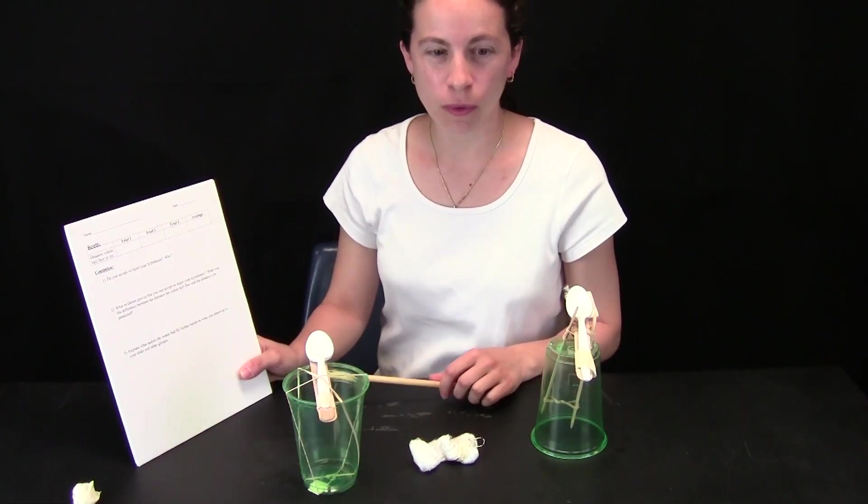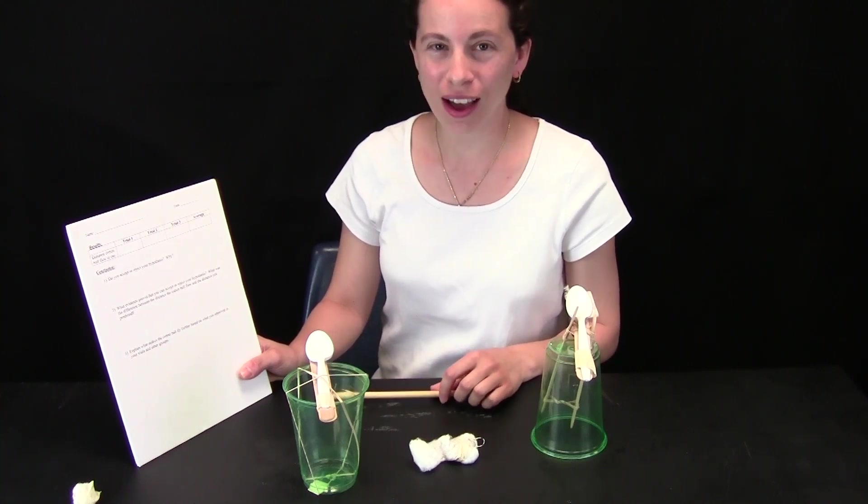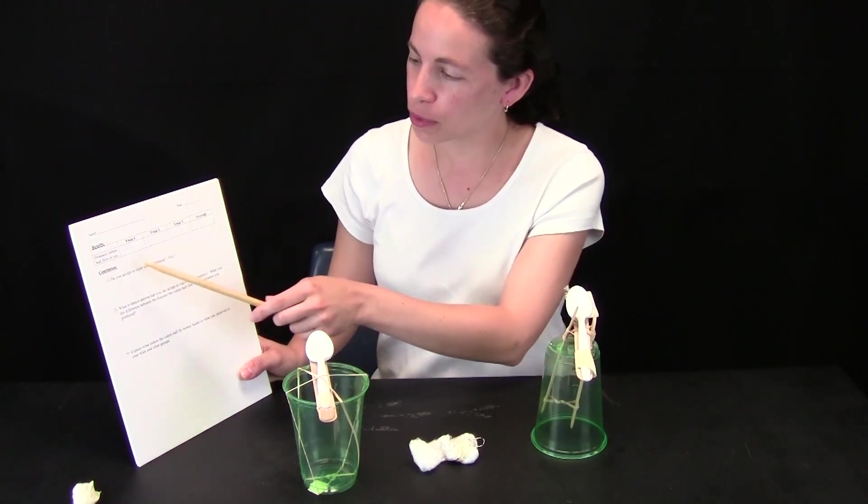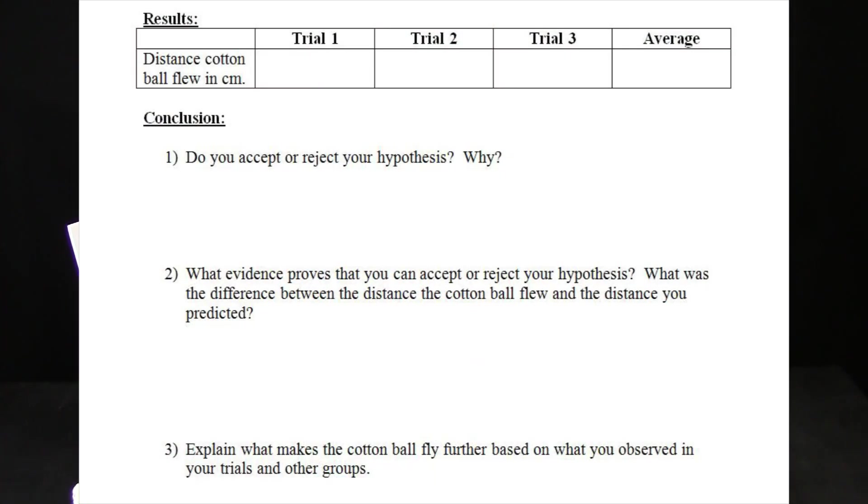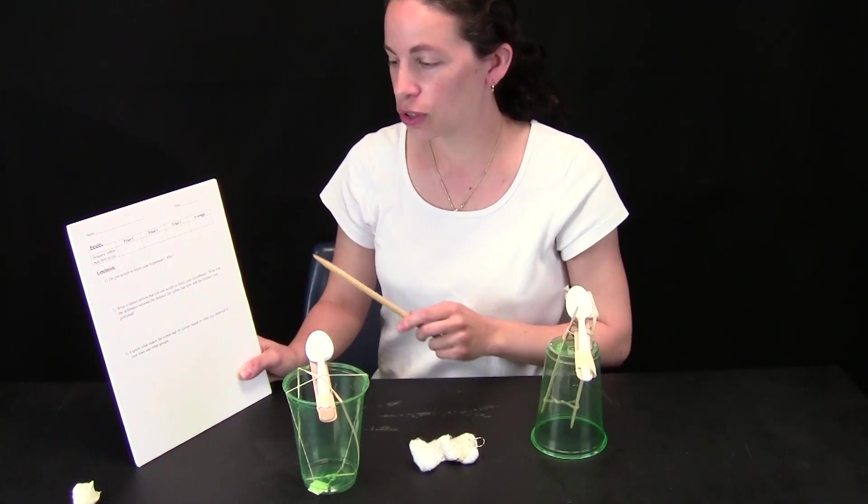When all the groups have a working catapult, the whole class will go outside. When we go outside, we line them up and three tries and we launch. I have them record each trial in centimeters, and then I have them figure out the average that it went.